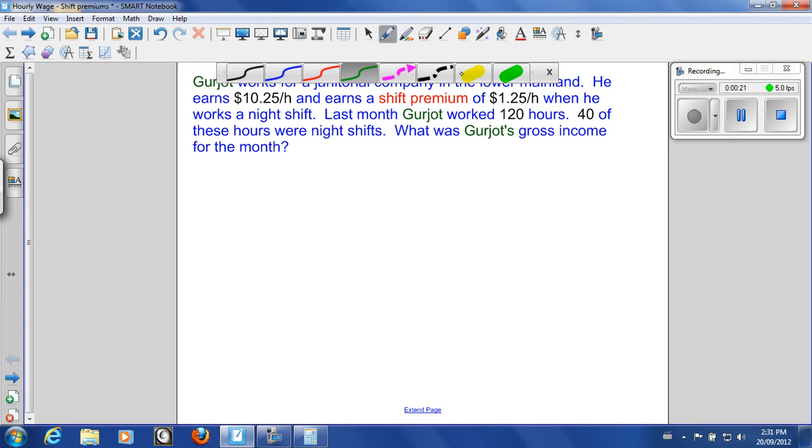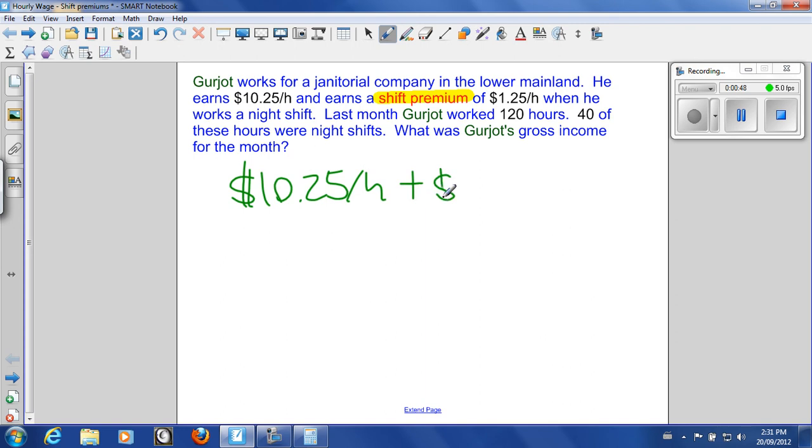A shift premium is a bonus wage for working undesirable shifts. In this case, night shifts are the undesirable shift. How a shift premium works is you take your regular wage at $10.25 an hour and add the shift premium wage of $1.25 an hour, which gives you your hourly rate for those night shifts. So $10.25 plus $1.25 is $11.50. He's going to make $11.50 an hour if he works a night shift, otherwise he only makes $10.25 an hour.